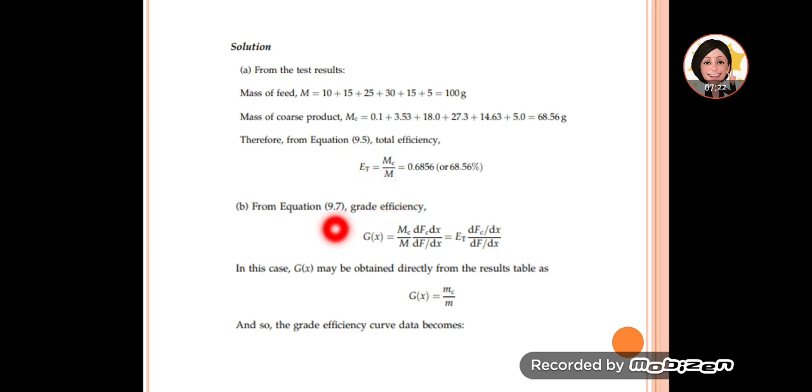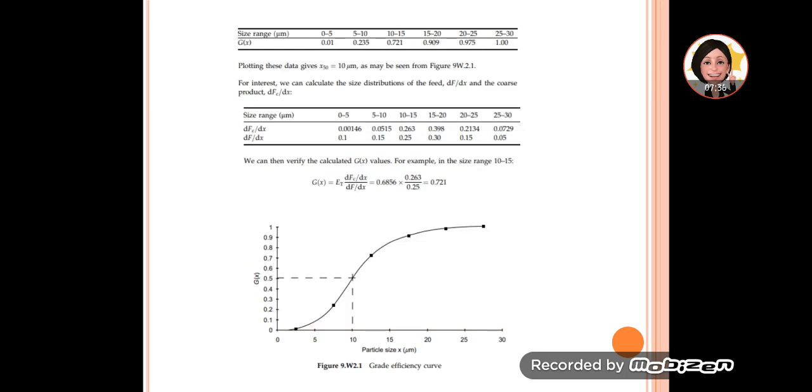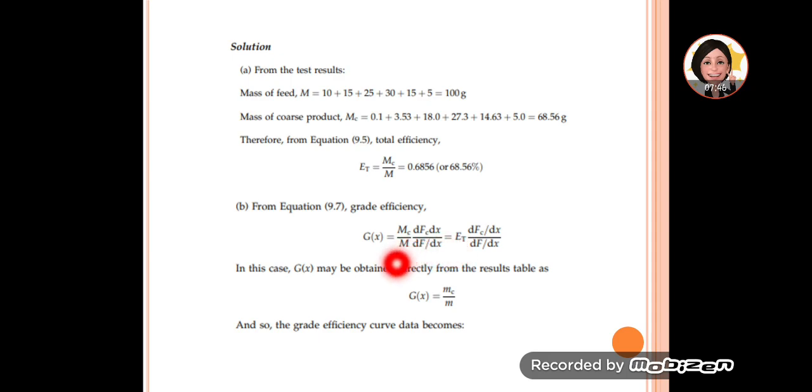From equation 9.7, for each grade we can identify its efficiency using this equation. That gives us this data of grade efficiency. In this example, we use directly the mass.